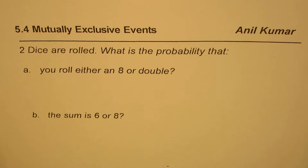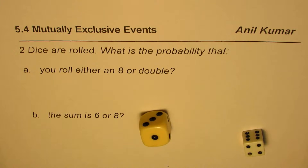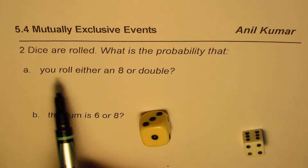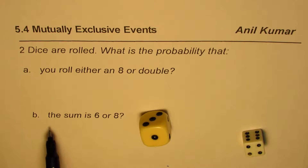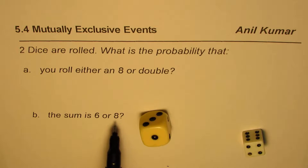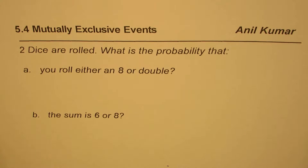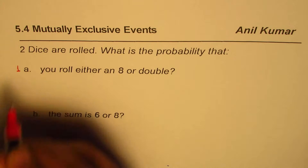I'm Anil Kumar and in this video we will learn how to find the probability of mutually exclusive or non-mutually exclusive events. We have a set of questions here — we are going to roll two dice. The first question is: two dice are rolled, what is the probability that you roll either an eight or a double? The second question is: what is the probability that the sum is six or eight? Let's call these question 1a and question 1b.